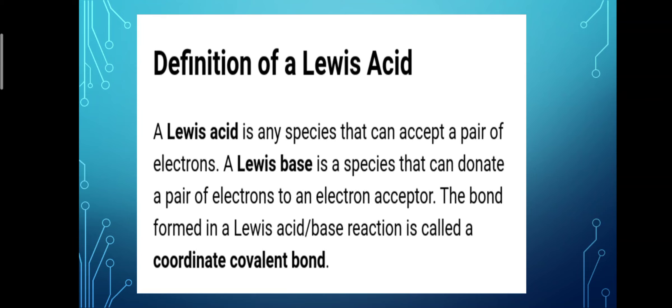Now the definition of a Lewis acid: A Lewis acid is any species that can accept a pair of electrons. A Lewis base is a species that can donate a pair of electrons to an electron acceptor. The bond formed in a Lewis acid-base reaction is called a coordinate covalent bond.